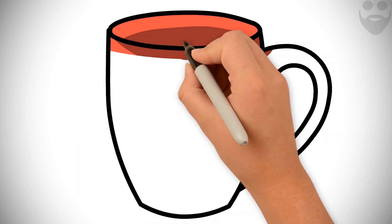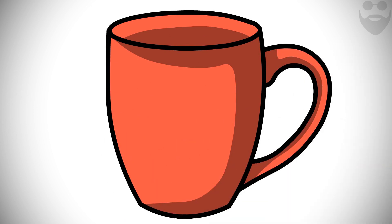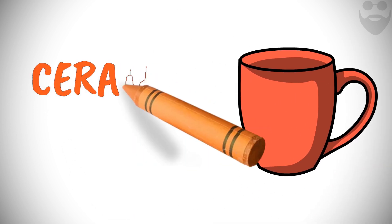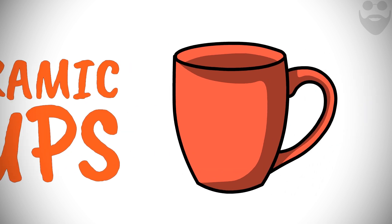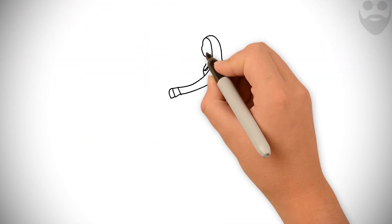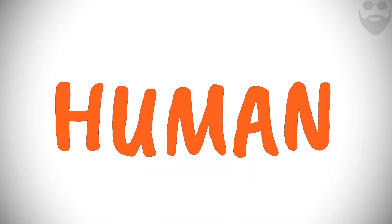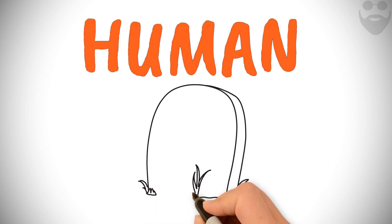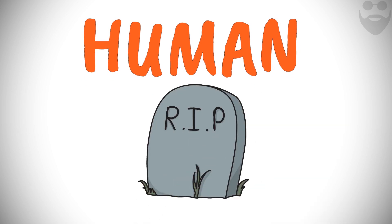With regard to whatever objects give you delight, are useful, or are deeply loved, remember to tell yourself of what general nature they are, beginning from the most insignificant things. If, for example, you're fond of a specific ceramic cup, remind yourself that it's only ceramic cups in general which you're fond. Then if it breaks, you'll not be disturbed. If you kiss your child or your wife, say that you only kiss things which are human. And thus you'll not be disturbed if either of them dies. Enchiridion 3.